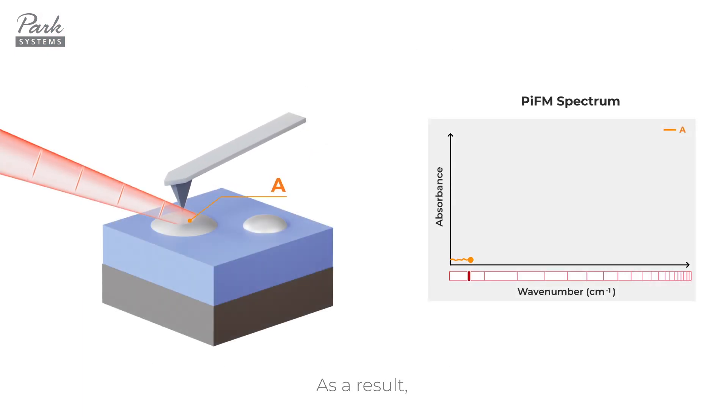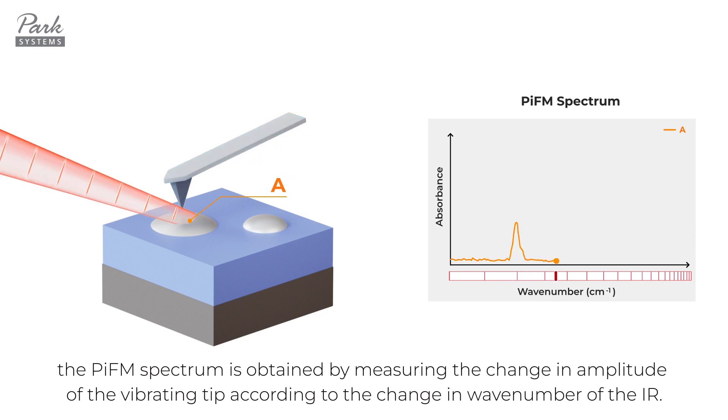As a result, the PIFM spectrum is obtained by measuring the change in amplitude of the vibrating tip according to the change in the wavenumber of the IR.